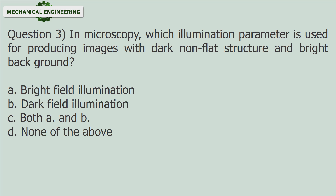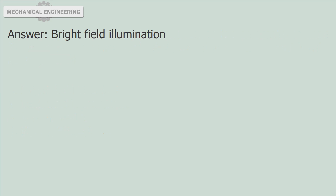Question 3: In Microscopy, which illumination parameter is used for producing images with dark non-flat structure and bright background? A. Bright field illumination. B. Dark field illumination. C. Both A and B. D. None of the above. Answer: Bright field illumination.